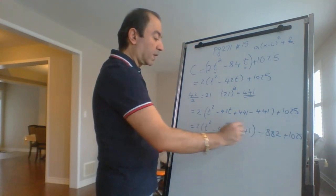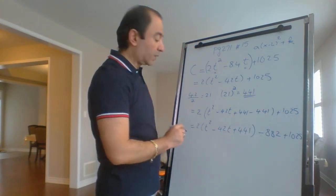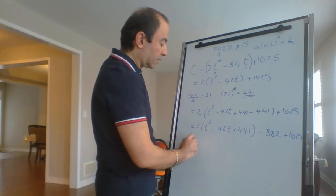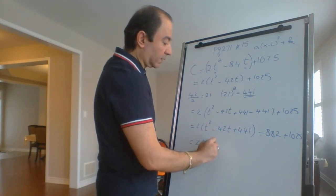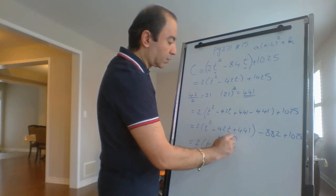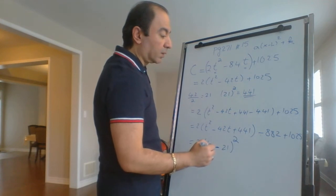Now whatever we have inside the brackets is a perfect square, so we factor that perfect square: 2(T - 21)², and we combine those like terms.